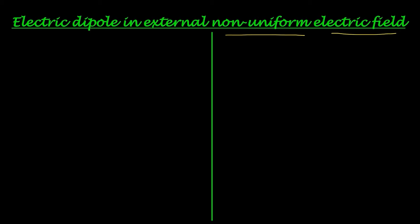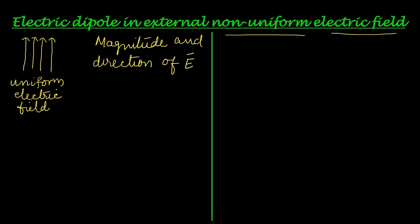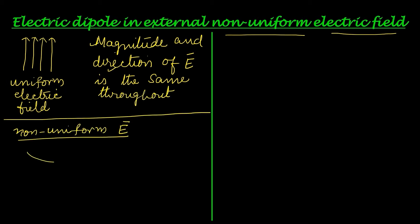We have already discussed electric dipole in external uniform electric field — click the 'i' button to watch that. For uniform electric field, the magnitude and direction of the electric field is the same throughout — it doesn't change anywhere. Non-uniform electric field is represented by lines which are not uniformly spaced. As shown in this diagram, the lines are crowded at one end, suggesting the magnitude of electric field is greater there.